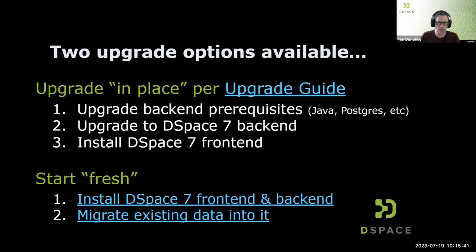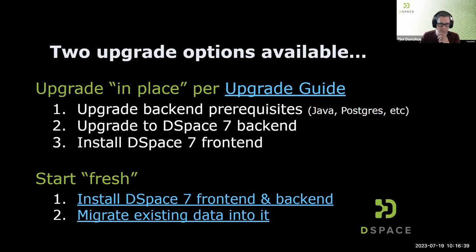There are two upgrade options available. First, upgrade in place using our upgrade guide, which walks through upgrading all prerequisites, doing a back-end upgrade, then installing the front end. Second, start fresh: install DSpace 7 fresh with no data, get comfortable with the front and back end running, then migrate your existing data over. Either option is possible. The migrate existing data link goes to our migration guide, and many institutions have done this successfully.